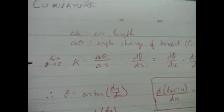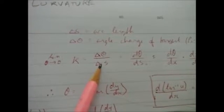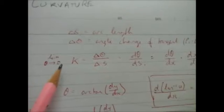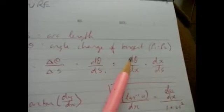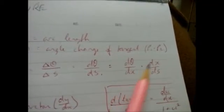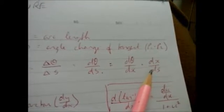Now I can say K, the curvature, is the change in theta over the change in arc length. And as the limit of theta comes to zero, I can rewrite that as dθ/ds, angle over arc length. Using a bit of chain rule, I can write that as dθ/dx multiplied by dx over the arc length.